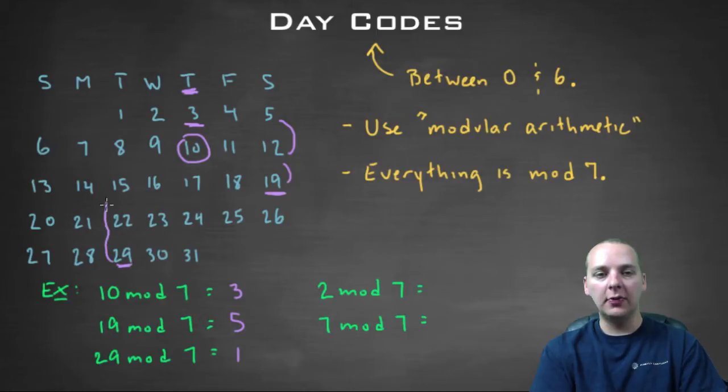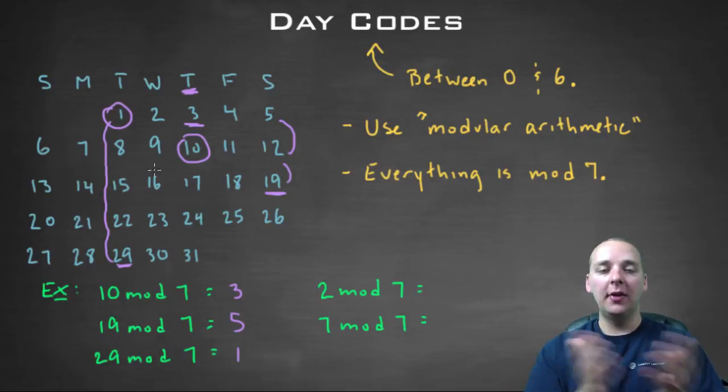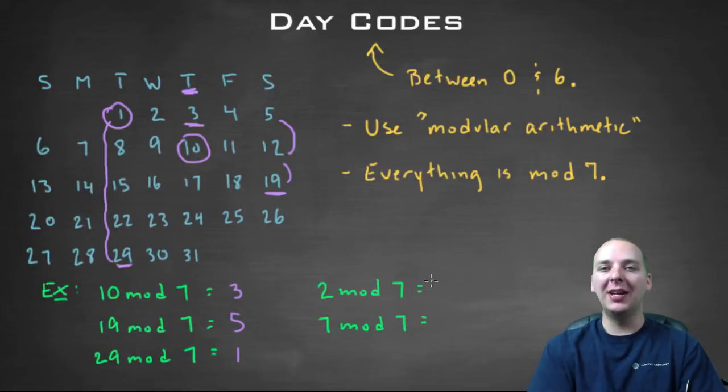And sure enough, if you look at a calendar, follow this all the way back up. Whatever day of the week the twenty-ninth fell on, the first would fall on the same day. Now, two modulo seven. Two is already less than seven, so you would just get two. And last one.